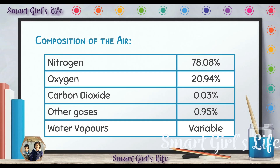Then we have the composition of the air. In the composition of the air, we are going to study what gases are present in the air and what is their percentage. How many percent of each gas is in the air? We have five main types of gases present in the air: nitrogen, oxygen, carbon dioxide, and other gases like neon, argon, and helium.